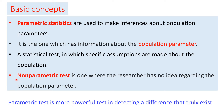Non-parametric tests are used where the researcher has no knowledge regarding the population parameters, and there are no assumptions in the case of non-parametric tests. In general, parametric tests are more powerful in detecting a difference that truly exists, so our priority is to first check the assumptions of the parametric tests. If all the assumptions are fulfilled, we use the parametric tests.